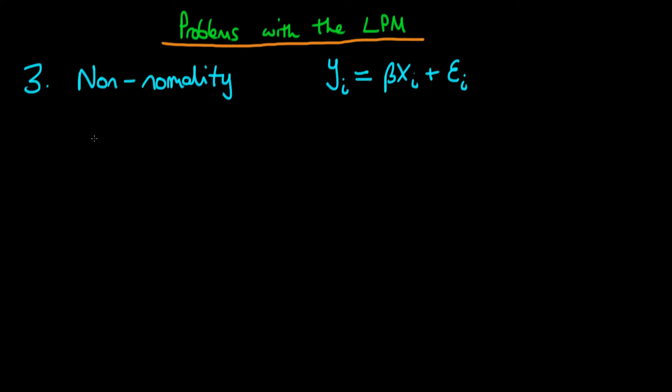In the last video we proved that epsilon i took on two values. If yi was equal to 0, then essentially what we're doing is replacing this yi with a 0, and when we did that we got minus beta xi for the epsilon term when we take this beta xi over to the other side.